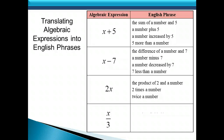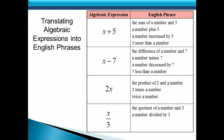Here's our last one: x over 3, or x divided by 3. We could say: the quotient of a number and 3, a number divided by 3, a number per 3, or the ratio of a number to 3.